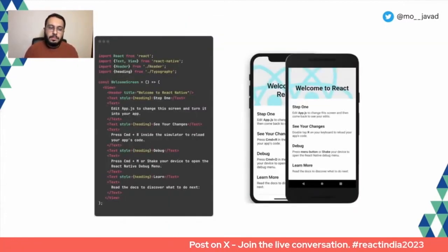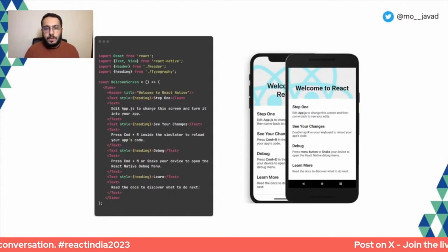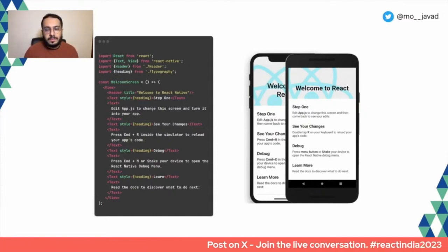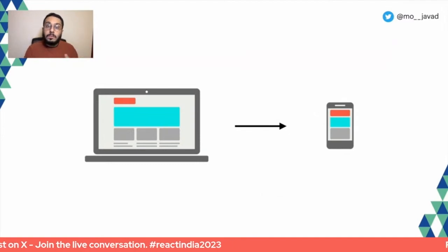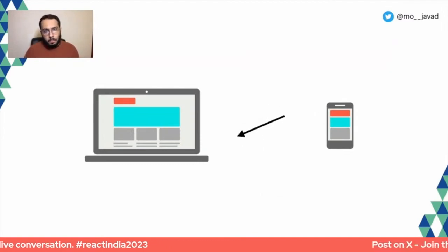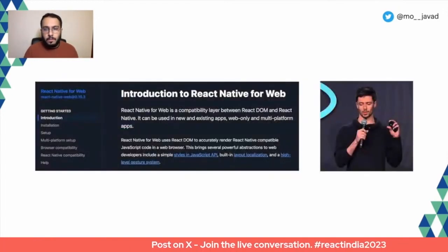React Native is a core component in this. React Native was revolutionary because it took the concepts we knew about building UIs in React — with a modern, declarative framework — and brought them over to native mobile development. A lot of people naturally saw that transition from web to mobile and thought, why can't we just go back? Why can't we use React Native for the web as well as mobile? And that's really where React Native for Web became a thing.